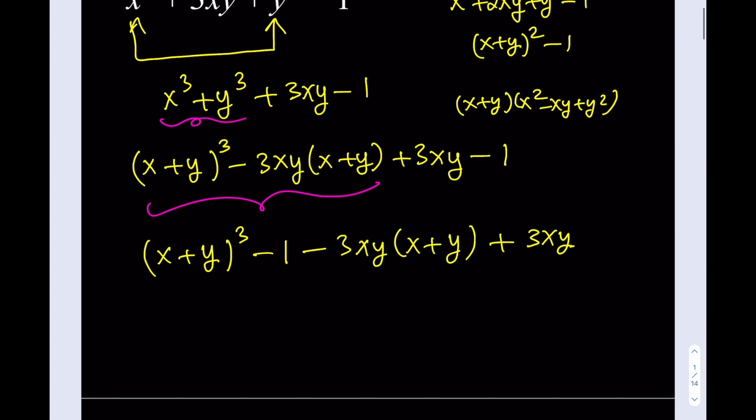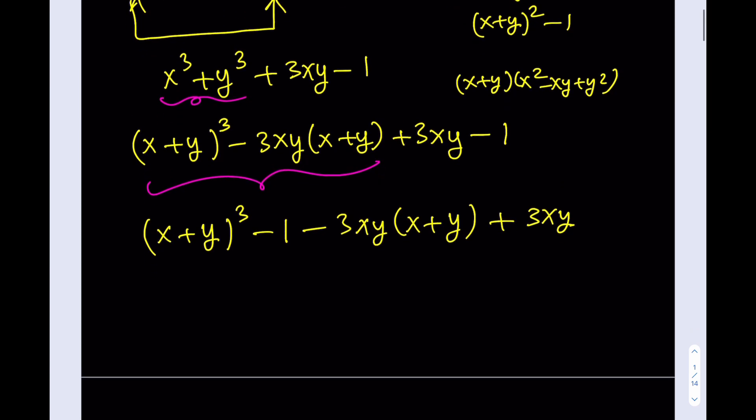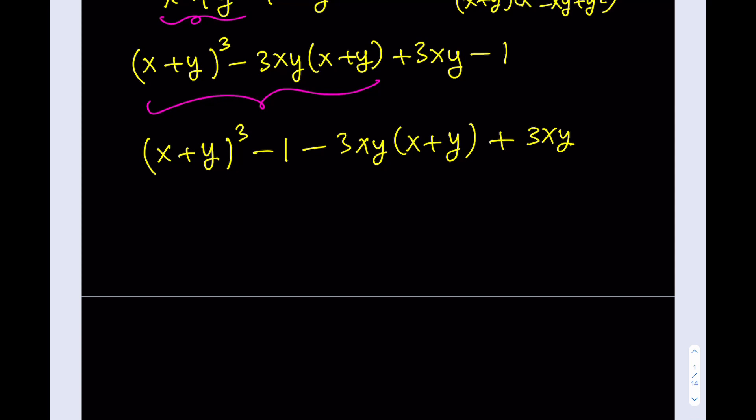I'm going to go ahead and factor that. How do you factor difference of 2 cubes? Well, we kind of talked about it here in the sum of 2 cubes version, but it's pretty similar. So we're going to write it as x plus y minus 1 multiply by the next term is going to be x plus y squared minus x plus y times 1, which is x plus y in parentheses, plus 1 squared, which is 1.